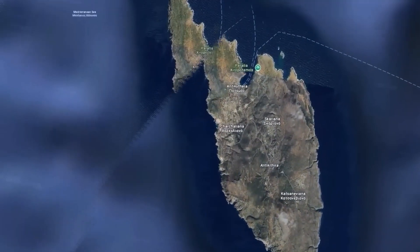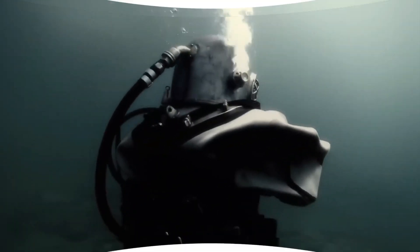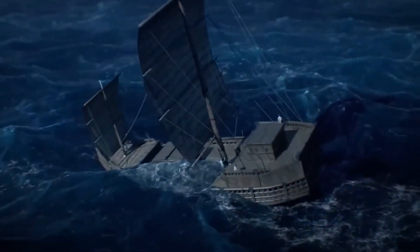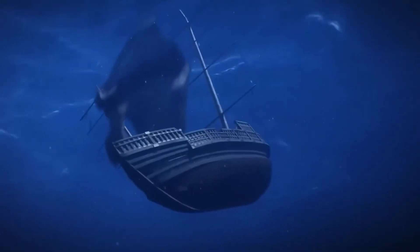In 1902, archaeologist Valerio Staius examined this object at the National Archaeological Museum in Athens. He noticed a gear wheel embedded within it, an unexpected find for an artifact so ancient.